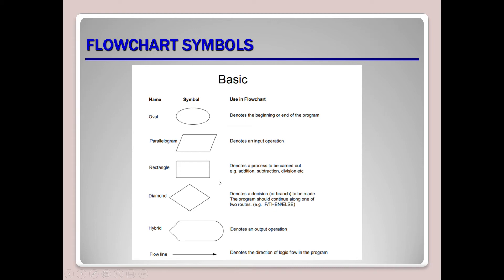The diamond denotes a decision or branch to be made — the program should continue along one of two routes. We use the diamond symbol when we need to take a decision, for example whether the average grade is less than 50 or greater than 50. The hybrid shape denotes an output operation — for example sending something to a printer or displaying something on a monitor. The line shows the flow of data from one symbol to another.